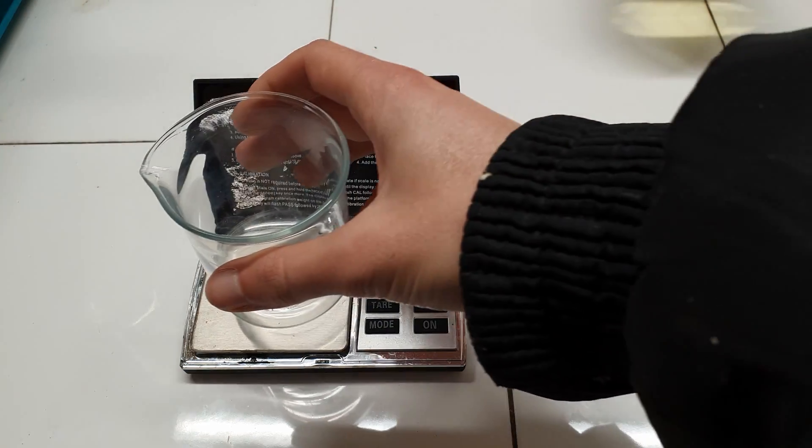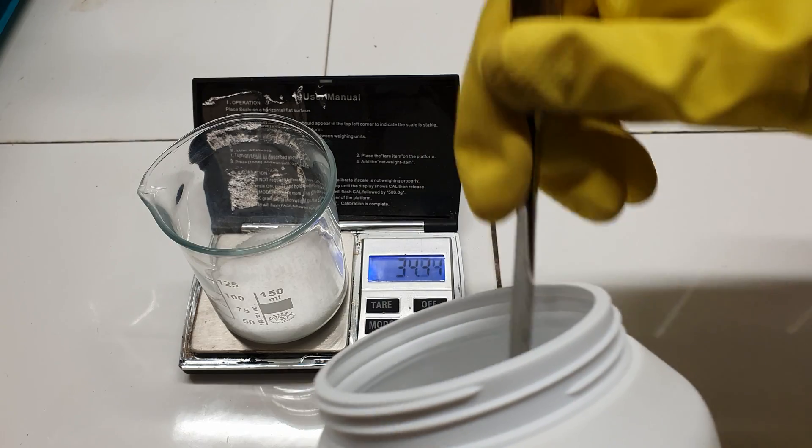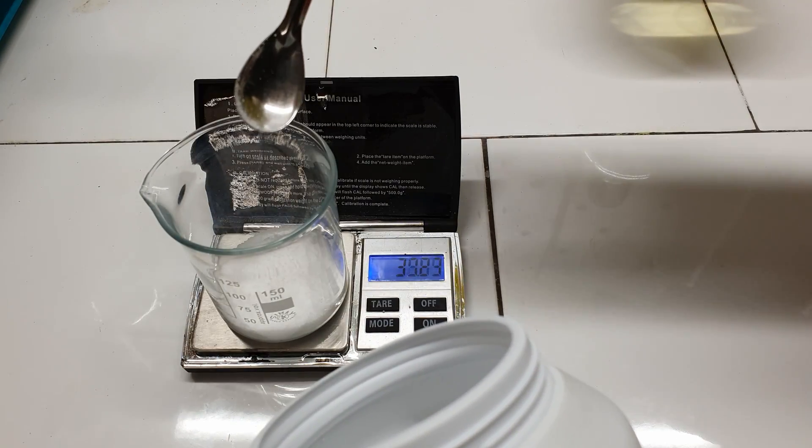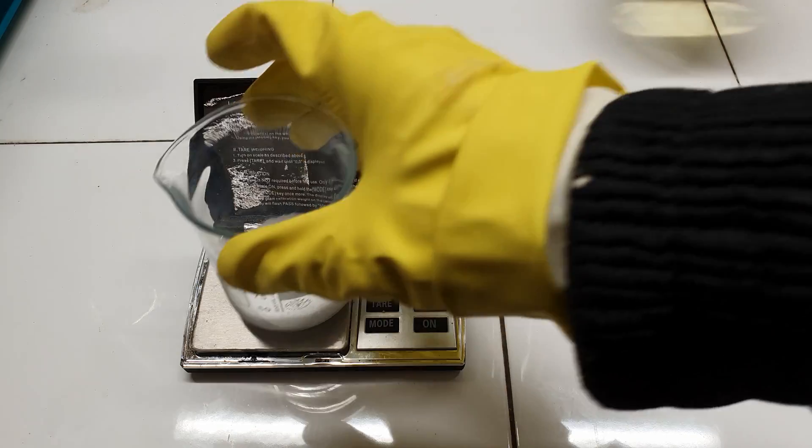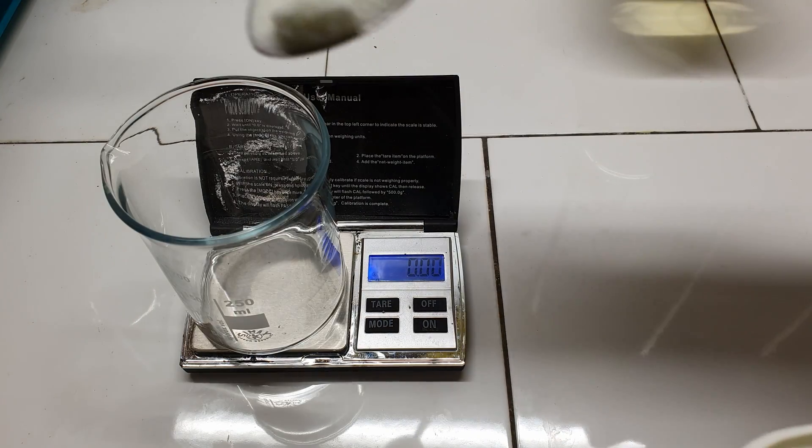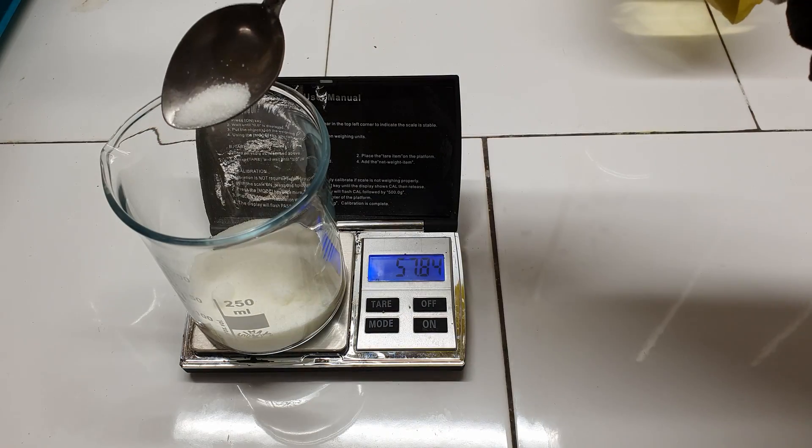To start off, I measured out in a beaker 40 grams of sodium hydroxide. I also measured 59 grams of sodium nitrite.